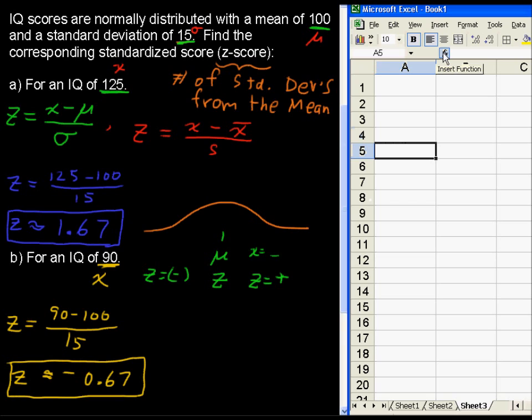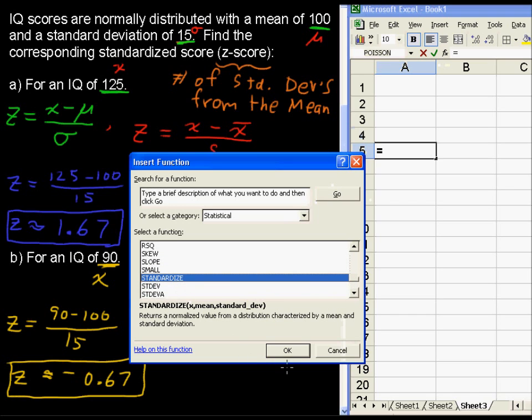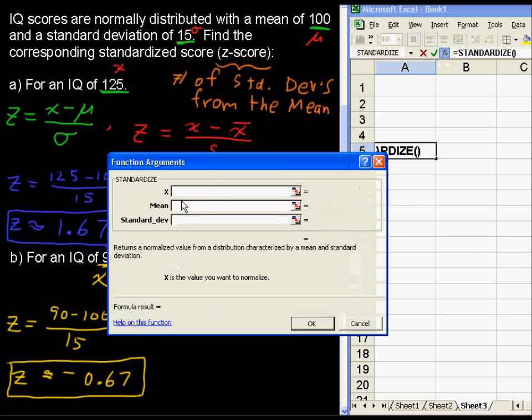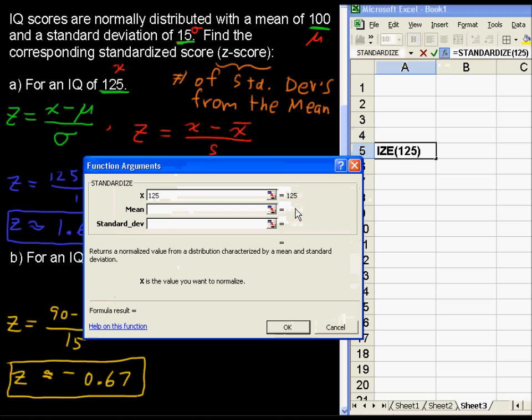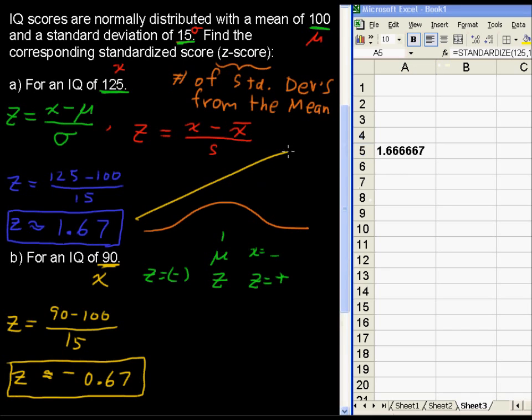The function is standardized. I'm going to just insert function this time, just to go through this process of finding this, in case you forget exactly what it's called. So we'll go down to standardize, click on it, and then it says, okay, standardize what? Well, if our x value we said was 125, and the mean was 100, the standard deviation is 15, and we say okay, it gives us exactly what we found earlier. That's this value.